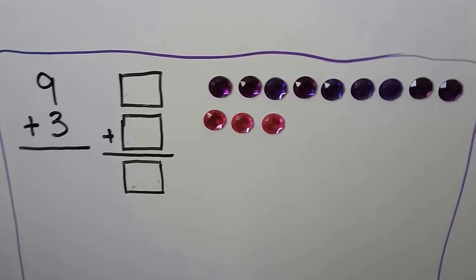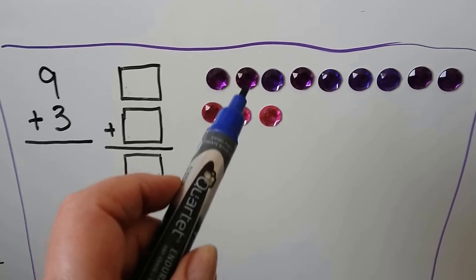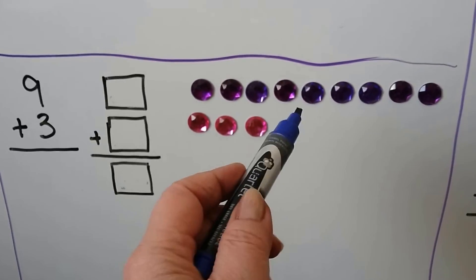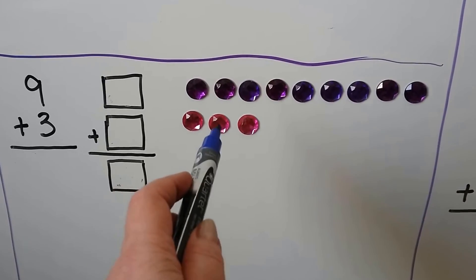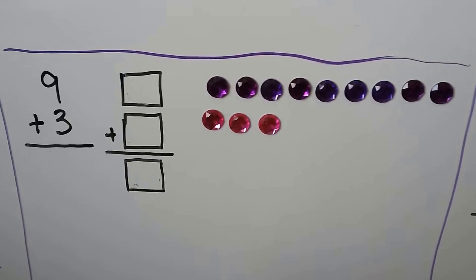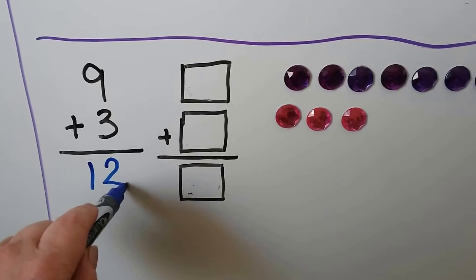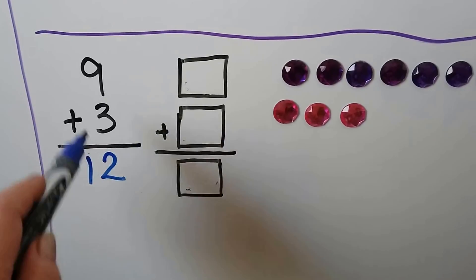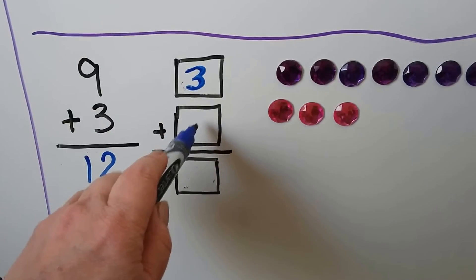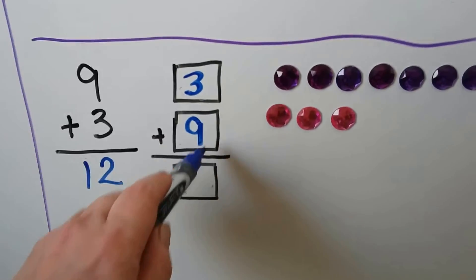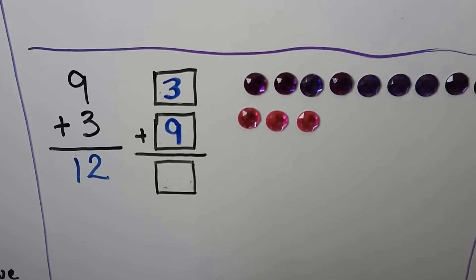Here we have 9 purple gems and 3 pink gems — 1, 2, 3, 4, 5, 6, 7, 8, 9, 10, 11, 12 gems. 9 plus 3 is equal to 12. We can change the order of the addends and put the 3 up here and the 9 below it. We haven't added or taken away any gems, so the sum is the same. It's 12.